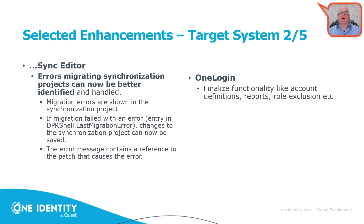On the OneLogin side — as discussed in previous videos — a new milestone has been reached. Everything from an Identity Manager perspective that is possible through the current OneLogin API is now implemented. This was finalized with reports, role exclusions, and account definitions to provision accounts in OneLogin systems. However, this is not the last improvement — with the next version, the OneLogin API will be improved, and the Identity Manager functionality will be extended accordingly.